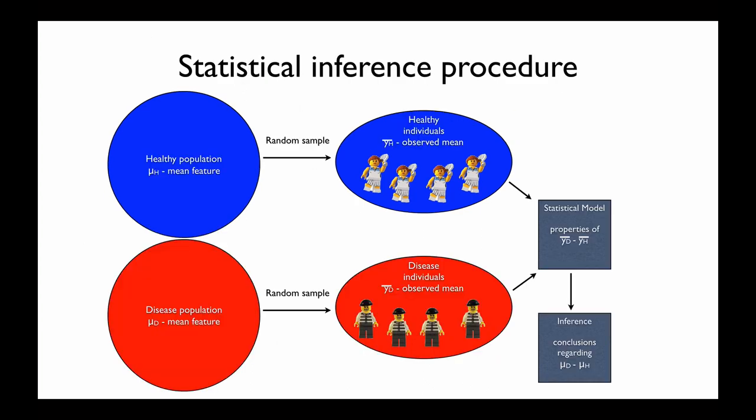Often, particularly in biological research, we are not so interested in observing a single population as such — we often want to contrast one population to another. This could typically be that we want to make an assessment about differences between healthy and diseased individuals. The way we do so is that we pick random samples from both the healthy population and the disease population.